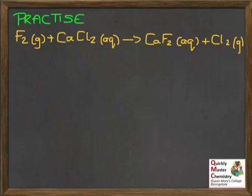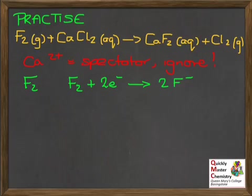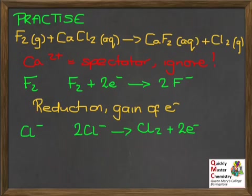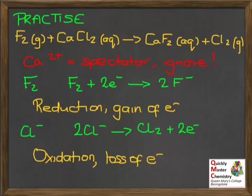Here's a chance for you to have a go: split a full balanced redox equation into the oxidation and reduction half equations. The answer: leave out the Ca²⁺ ion — it's a spectator. Then F₂ + 2e⁻ → 2F⁻ (reduction, gain of electrons). And 2Cl⁻ → Cl₂ + 2e⁻ (oxidation, loss of electrons, electrons on the right). You could also simplify these to: ½F₂ + e⁻ → F⁻ and Cl⁻ → ½Cl₂ + e⁻, which would be equally correct.